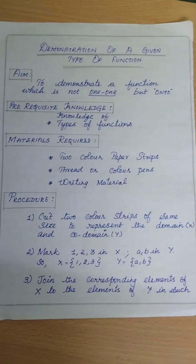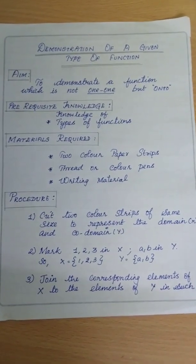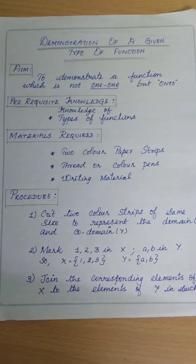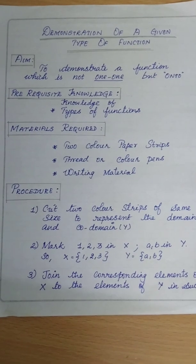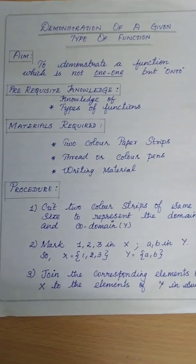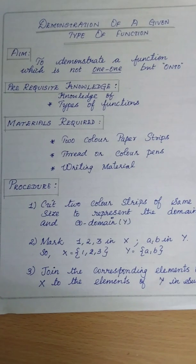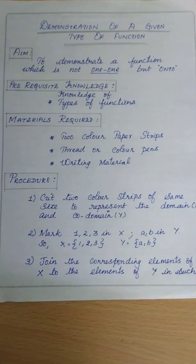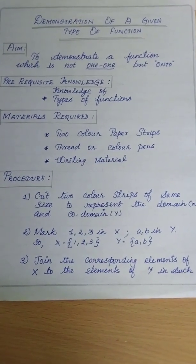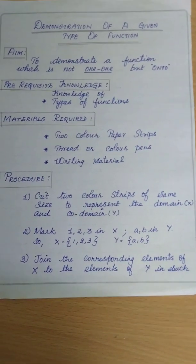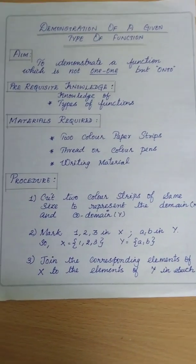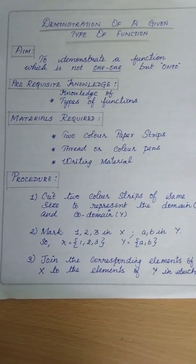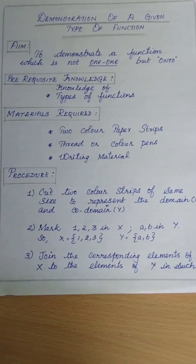Now we will go to the write-up part. The aim of this activity is to demonstrate a function which is not one-to-one but onto. For this, we need prerequisite knowledge of all types of functions: if one element of the domain is connected with one element of the co-domain it is one-to-one; more than one element of the domain connected with one element of the co-domain is many-to-one; if all elements of the co-domain have a pre-image it is onto; if any element is left out it is into.